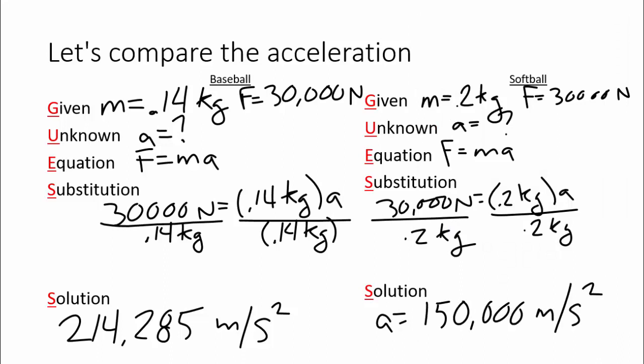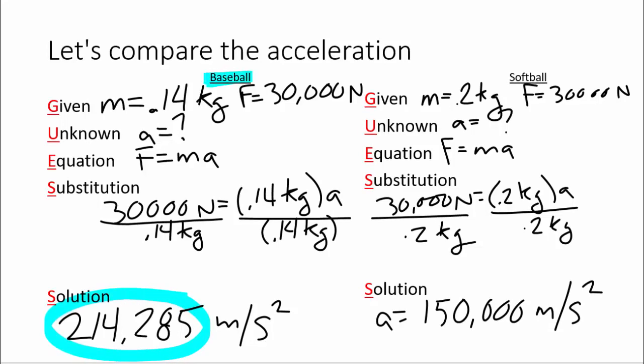So what did we just prove here? We showed that there's more acceleration for a baseball. The ball is going to speed up. It's going to get faster, quicker coming off of the bat. Why is that? Because its mass is smaller. And that makes sense to us, right? A smaller ball, something that's lighter, we're going to be able to hit it further.